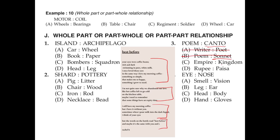Empire and kingdom both represent kingship — similar meaning — so we cut this out. Without B we can't have the answer, so D is our right answer. Eye and nose are both parts of a body.